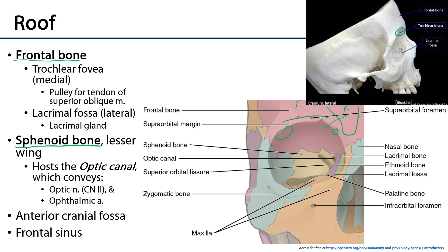The lesser wing of the sphenoid bone plays a role in the roof of the orbit, and its major feature of concern is the optic canal. The optic canal is a continuity between the middle cranial fossa and the orbit, and it conveys cranial nerve 2 — the optic nerve — as well as the ophthalmic artery, which is the major source of blood for the orbit.